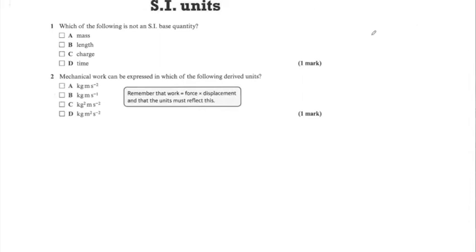The SI base quantities. The SI system is an internationally agreed system of units and measurements. We've agreed that there are seven base quantities, and they are as follows.